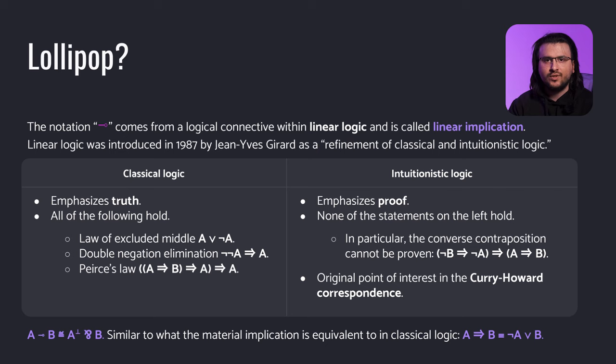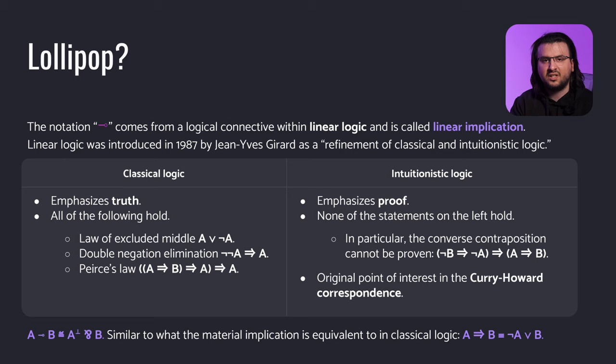In linear logic, however, these formulae are treated as resources, and there's a special modality that allows us to perform certain actions we might completely disregard in normal type systems. Linear implication is defined in terms of linear negation — denoted with a superscript bottom — and the so-called multiplicative disjunction, or par, which looks like an upside-down ampersand. It's similar to how material implication works in classical logic: A implies B is equivalent to not-A or B.